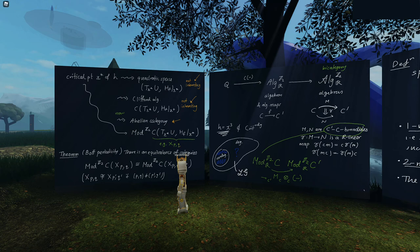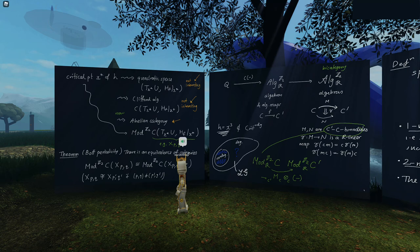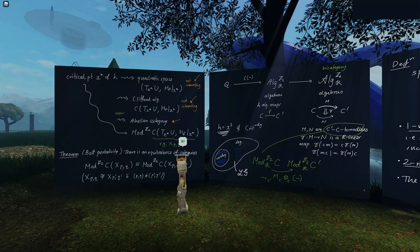Question: What does Bott periodicity tell us about the actual singularities involved in the sense discussed last talk? Answer: Bott periodicity — and there's a version for complex numbers called Knura periodicity — does appear in physics, but in fancy parts like string theory. I wouldn't be able to explain how it appears there, and I don't know a simple way of explaining what it means at the more elementary level of ODEs, so I don't know any way of saying what Bott periodicity means in that context. It's a very interesting question.